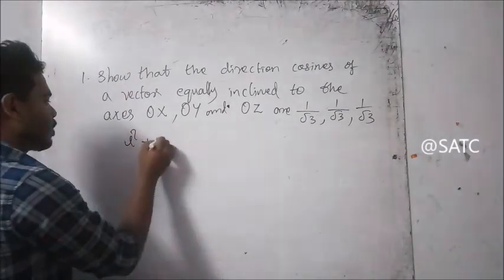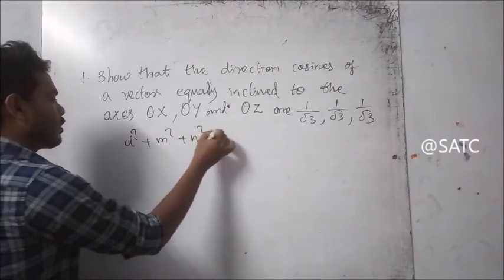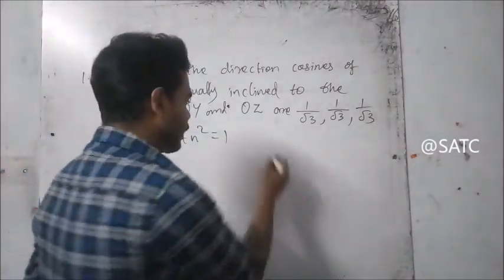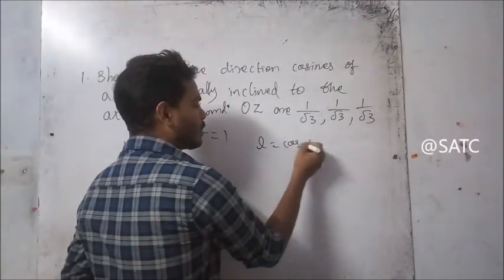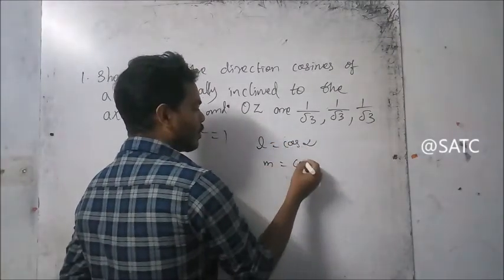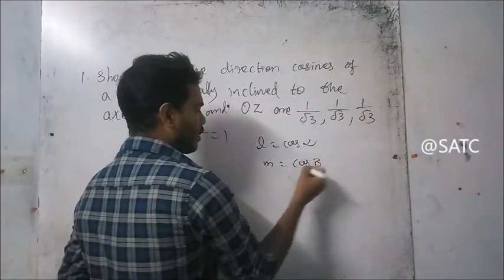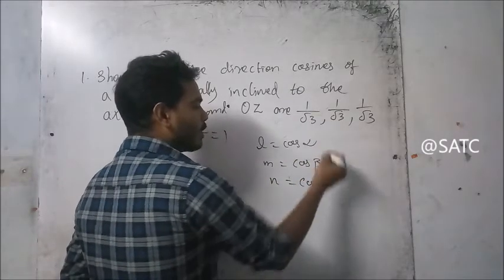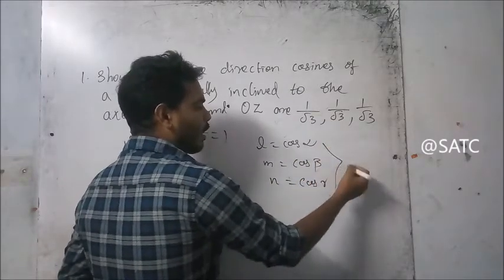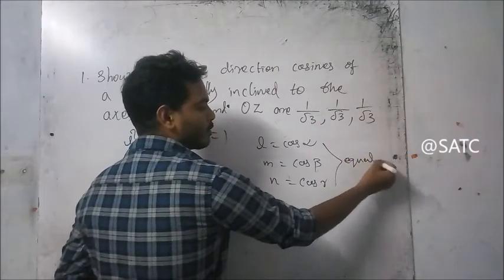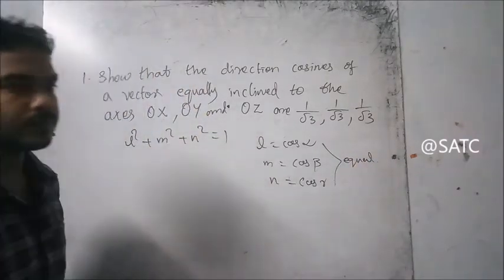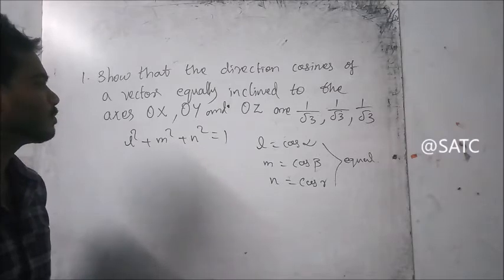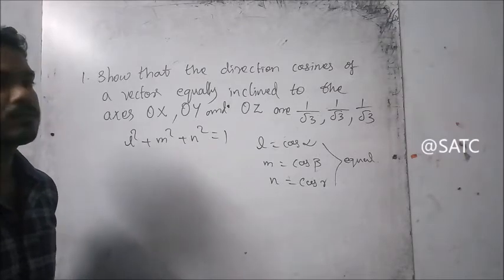L is equal to cos alpha, M is equal to cos beta, N is equal to cos gamma. They say all are equal. So the value is one by root three, one by root three, one by root three.